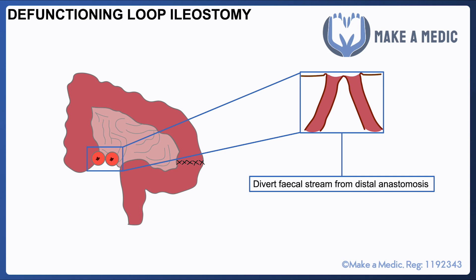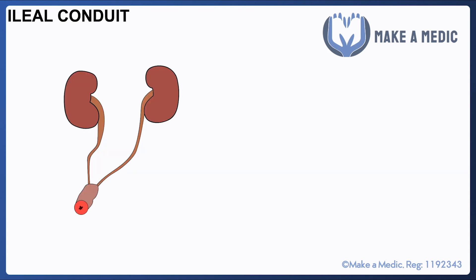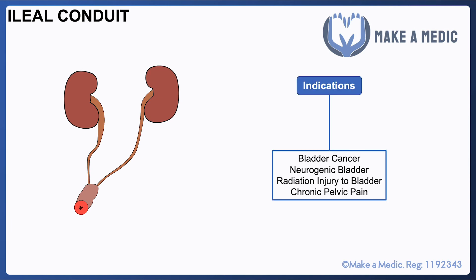Finally, the last type of stoma is a urostomy, or ileal conduit. This involves removing a small segment of ileum, forming a pouch, bringing it to the surface as a stoma, and then connecting the ureters onto the end of that pouch. This is done in conditions where the bladder needs to be removed or doesn't work properly — a common indication being bladder cancer where the patient has had a cystectomy and needs to be able to pass urine out of the body via the ileal conduit.